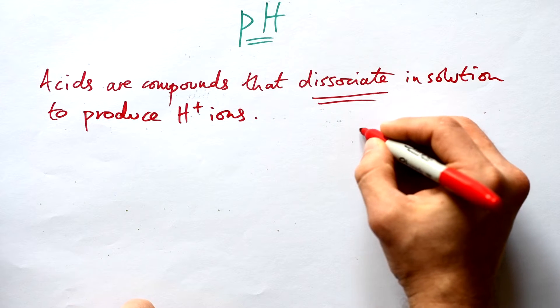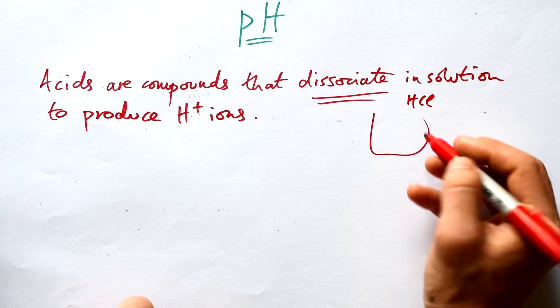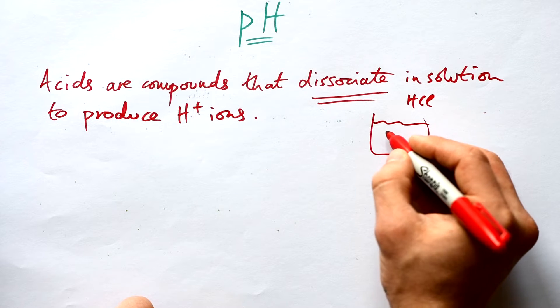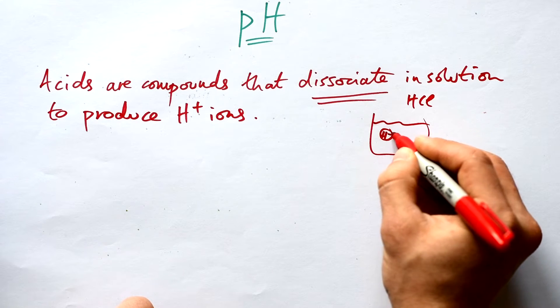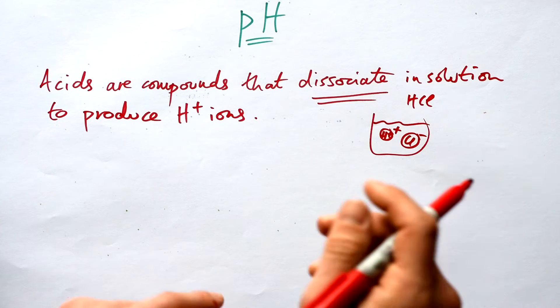So let's take HCl. HCl, hydrochloric acid—it's H and Cl. When we put it in water, the H and the Cl dissociate to make H+ and Cl-.